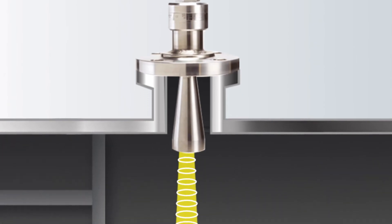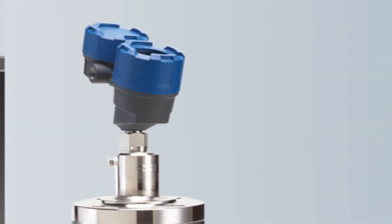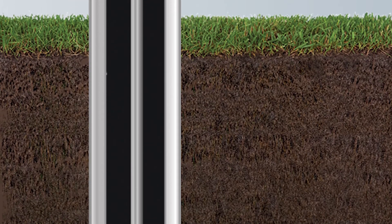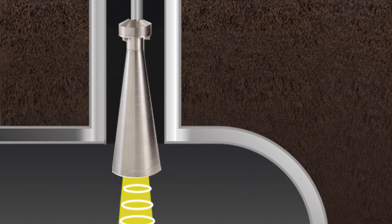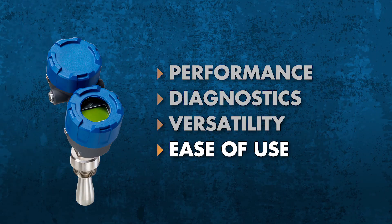Pulsar antennas are up to the task, and the smaller antennas can be installed into process connections as small as one and a half inches. In addition, there are nozzle extensions from four inches to 72 inches, so underground vessel standpipes are never a problem.